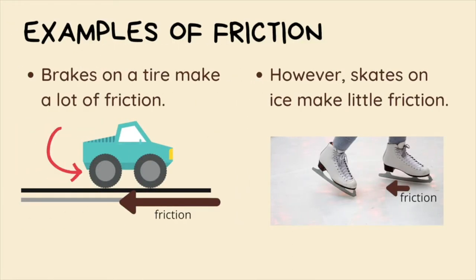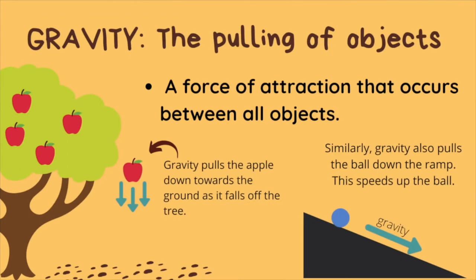Some examples of friction are brakes on a tire and skates on ice. Gravity is a force that pulls objects down towards the center of the earth. In the image, gravity causes the apple to fall towards the ground. Similarly, gravity is also pulling the ball down the ramp. The ball is already rolling fast since it is going downhill, but as gravity pulls on it, the ball has an even faster speed.